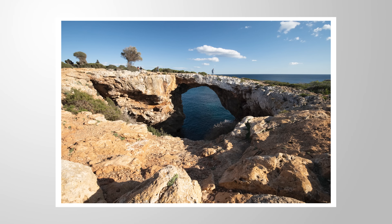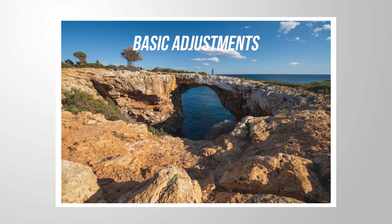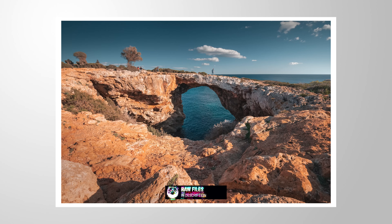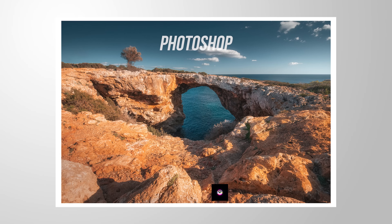Let's edit this image. First, we're going to use Lightroom to do some basic adjustments, followed by a little bit of masking. Then we're going to shift the colors to create a more pleasing color palette. And finally, I'm going to use a little bit of Photoshop to add some more specific adjustments. If you want to follow along, feel free to download the raw file from the link in the description.